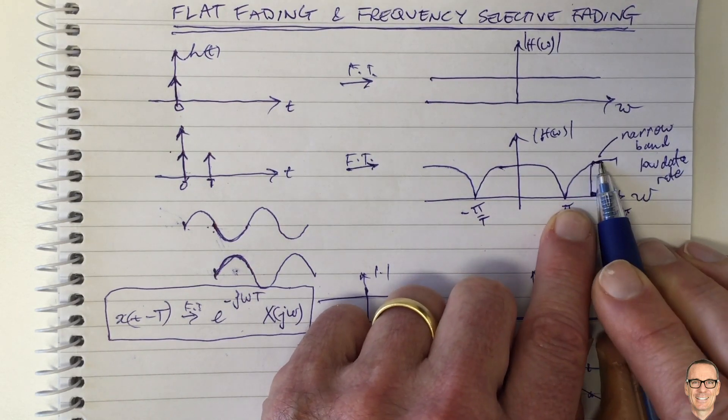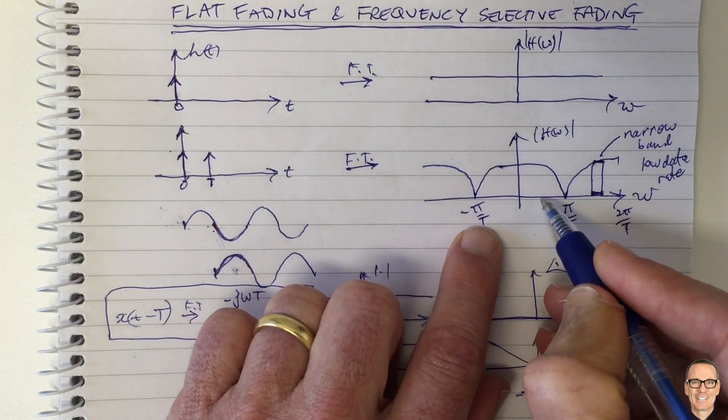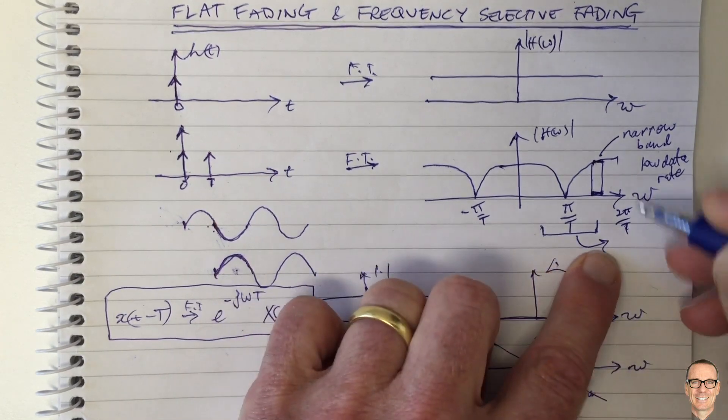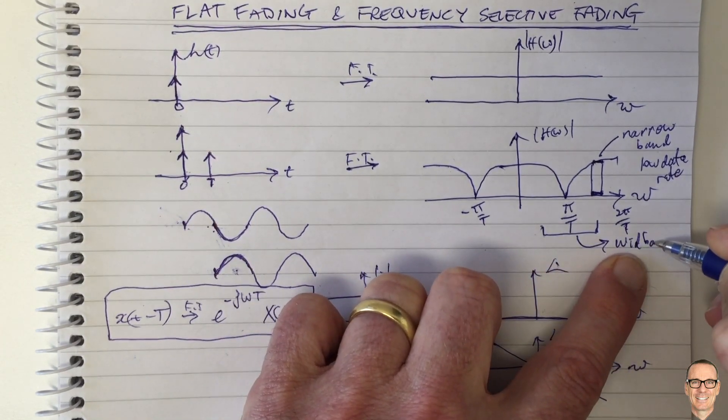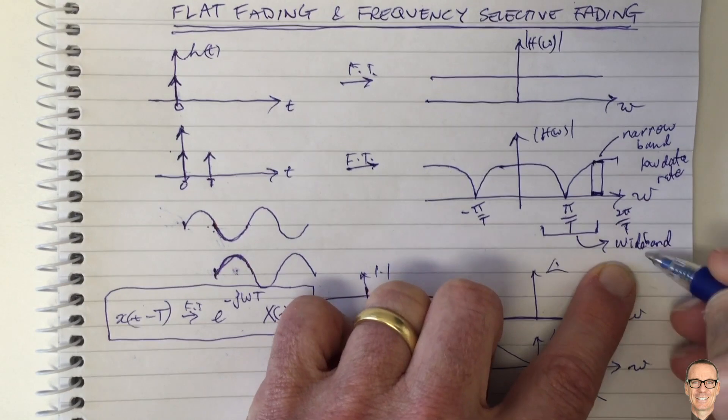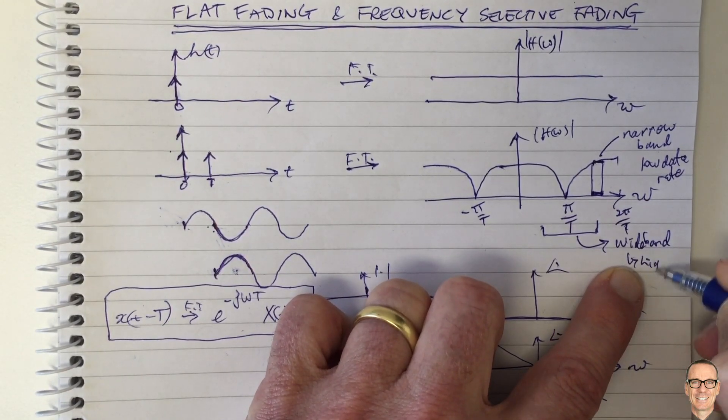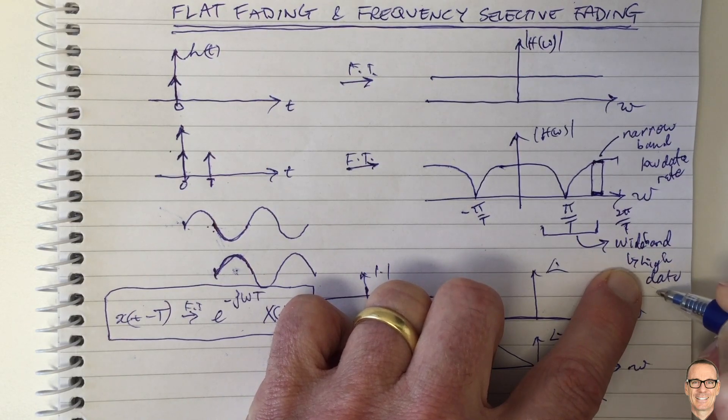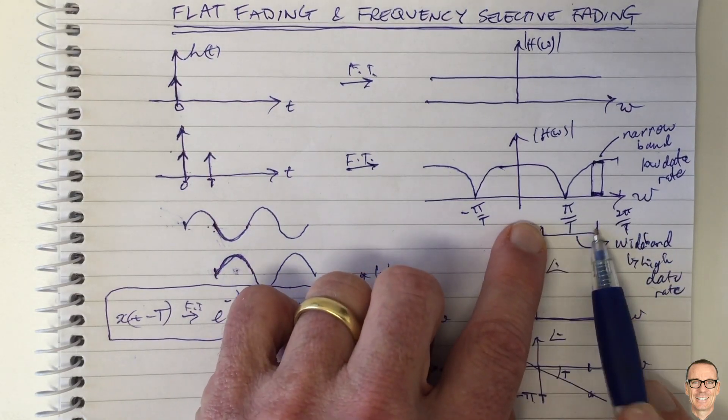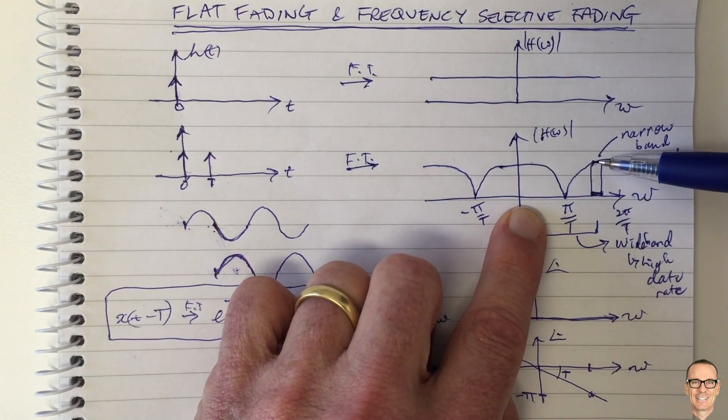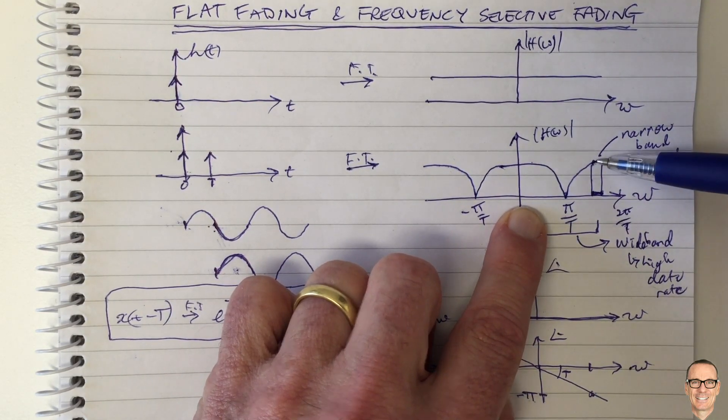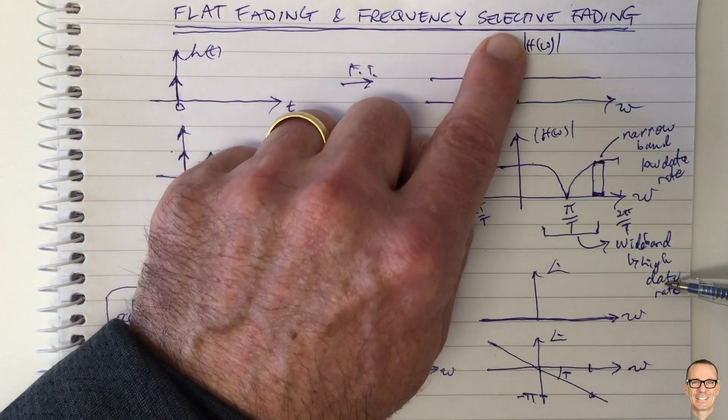So if you're sending out a low data rate, then you tend to have a flat fading channel. If you were instead to use, let's say this whole portion over here of the frequency band, then you would be having wide band signaling. So this depends on your data rate. So this is a wide band signal. And in this case, this corresponds to high data rates. So if you have high data rates, you tend to have a frequency selective channel. So high data rates means broadband, which means there's a good chance that the channel will have frequency notches in it. And that's frequency selective. So low data rates tend to be flat fading. High data rates tend to be frequency selective.